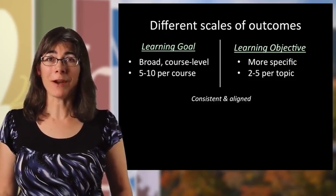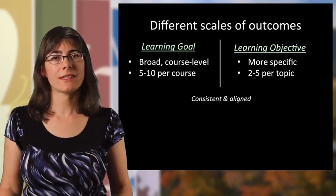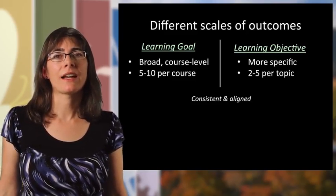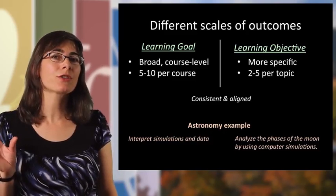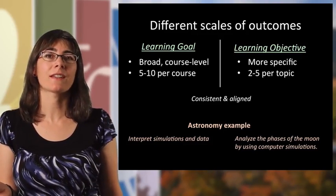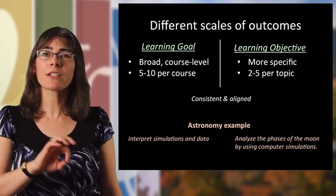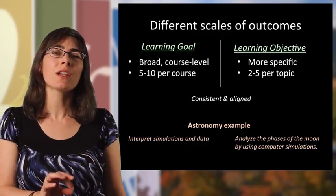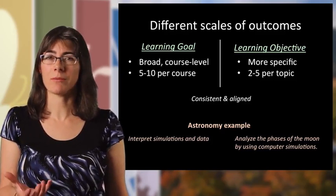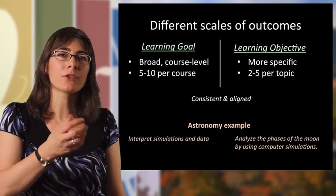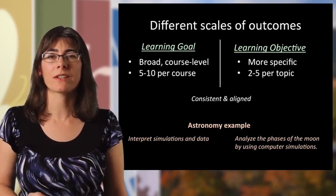The important thing about these core skill goals and topic-level objectives is that they should be consistent with each other — they should be aligned. Here's an example from astronomy: one big course goal might be that students interpret simulations and data, and then in a unit on the phases of the moon, students analyze those phases using computer simulations, helping them reach that broader course goal.